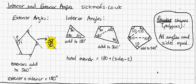Okay, so the more sides you have, the more angles you have, the smaller they will be, but they'll always add up to 360 degrees.